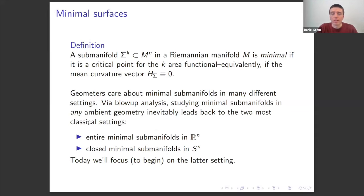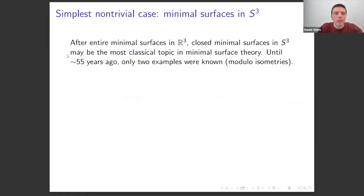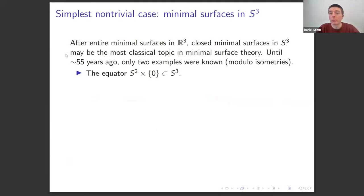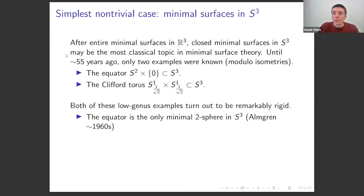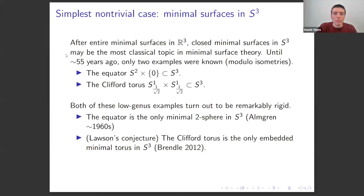We start with the most classical version: closed minimal surfaces in the 3-sphere. Until about 60 years ago, there were just two known examples — the totally geodesic ones (equators) and the Clifford torus, a product of circles. Both are very rigid: the equator is the only minimal 2-sphere in S³ by Almgren, and by Brendle's resolution of the Lawson conjecture, the Clifford torus is the only embedded minimal torus in the 3-sphere.